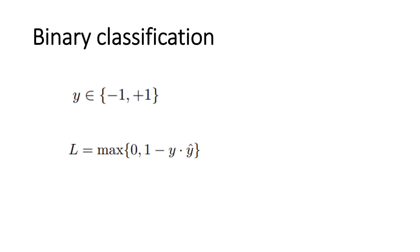With the introduction of an activation function, we introduce non-linearity for the network to be able to learn and approximate very complex mappings between the inputs and outputs. This is very important because real-world scenarios are very complex — we have a lot of features to consider. Introducing the activation function helps us capture these complex relationships. The hinge loss now has the identity activation, which helps in minimizing the error.